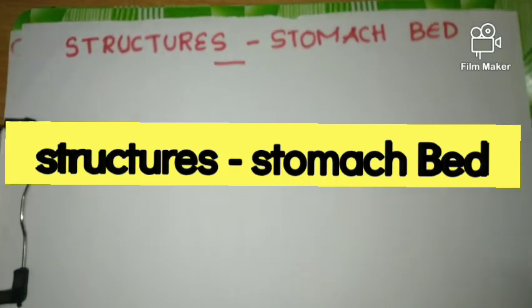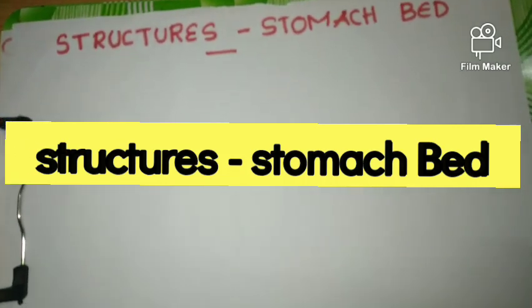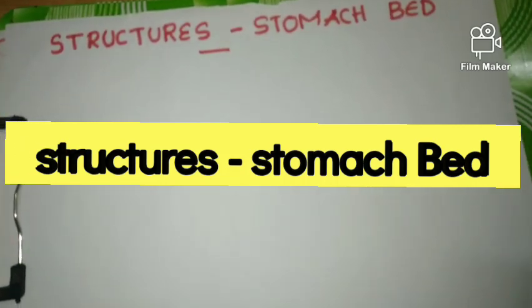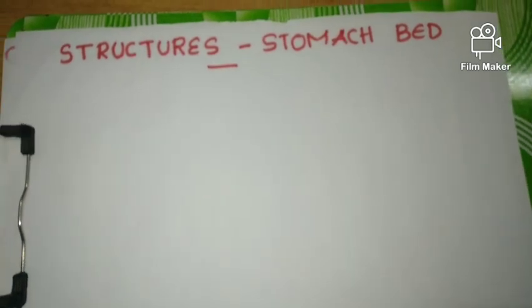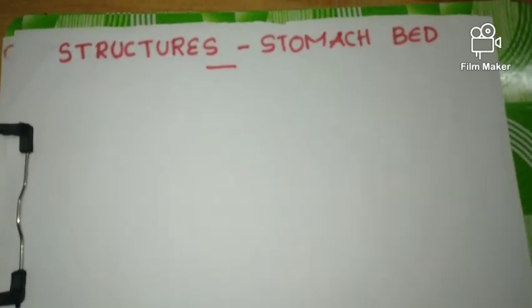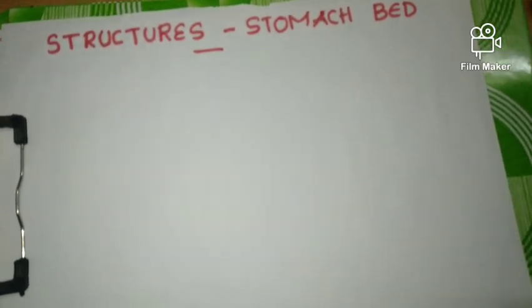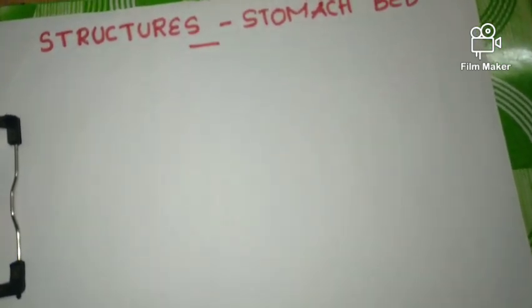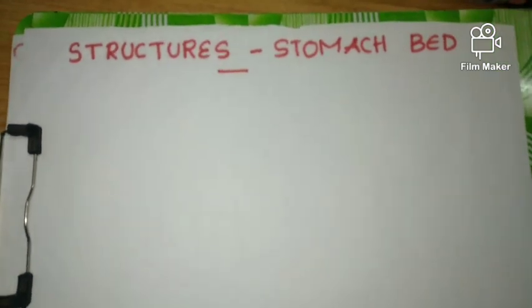Today we are going to learn about the structures that form the stomach bed — where the stomach lies. On the posterior surface, there is a lesser sac present behind the stomach, and behind that lesser sac we can see many structures. This is a simple topic and easy to learn.